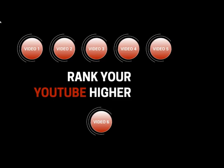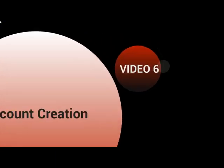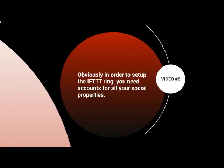Hello and welcome to video number six, and we're going to talk about account creation. In order to set up the IFTTT ring, you need accounts for all of your branded social properties — username and password for Facebook, Twitter, and all the others. If you already have some, great. For the ones you don't have, you'll need to create them. While that sounds simple, there are a few important things to focus on to avoid having accounts closed.